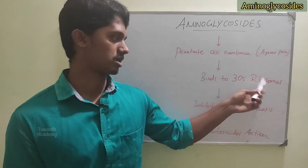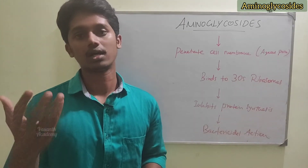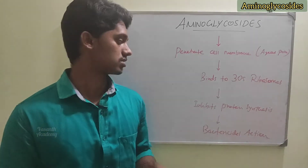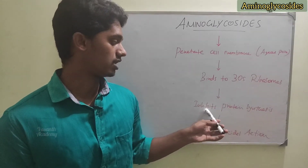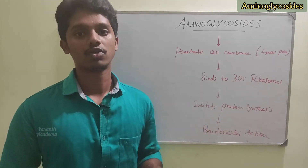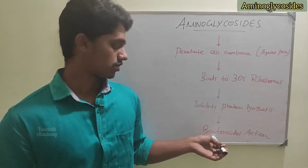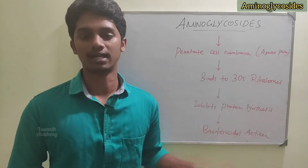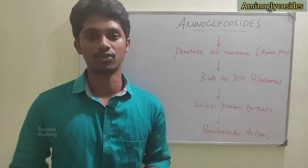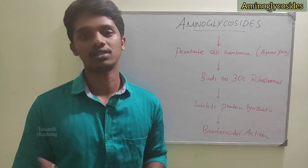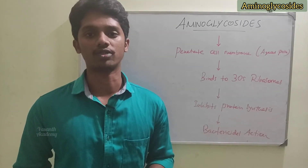By binding to the 30S ribosomal subunit, aminoglycosides block ribosome function, which inhibits protein synthesis. Because protein synthesis is blocked, the bacterial cell cannot survive. This results in a bactericidal effect — the drug kills the microorganisms. That is the mechanism of aminoglycosides.